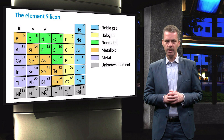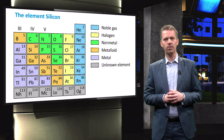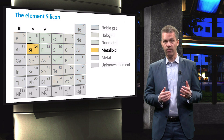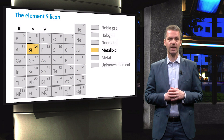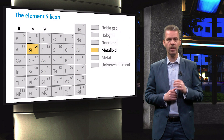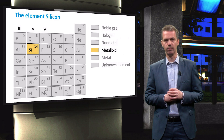The element silicon is a metalloid with atomic number 14. It has 4 valence electrons and can therefore make covalent bonds with 4 neighbouring atoms.